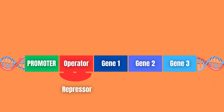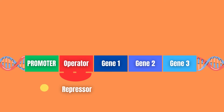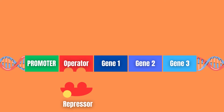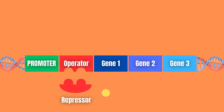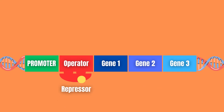If the repressor is naturally bound to the operator, it is said to be repressible, as it requires external changes to stop binding to the operator. If the repressor naturally remains unbound, it is said to be inducible, as it requires external changes to start binding to the operator.